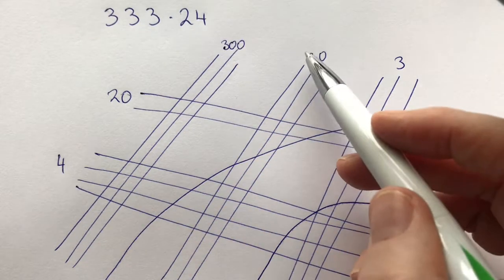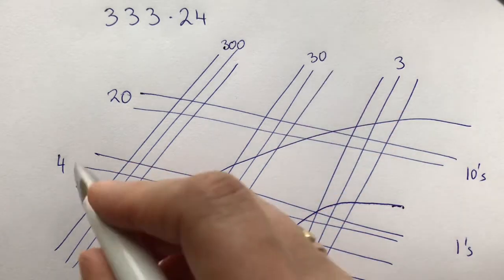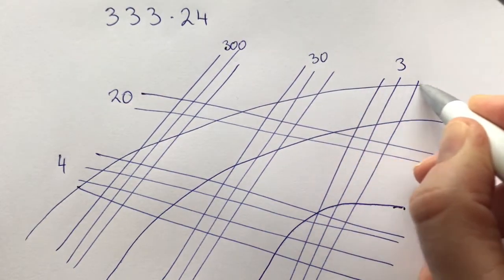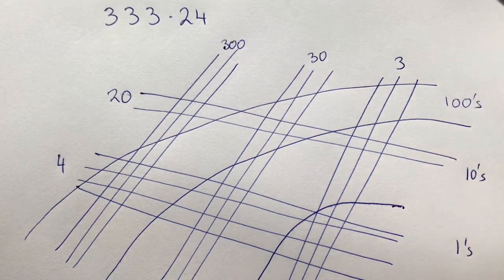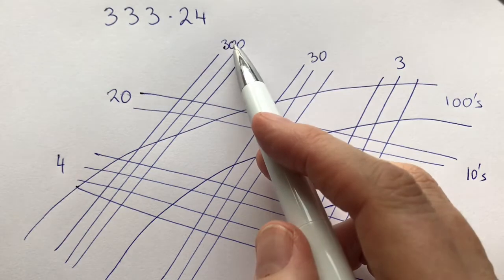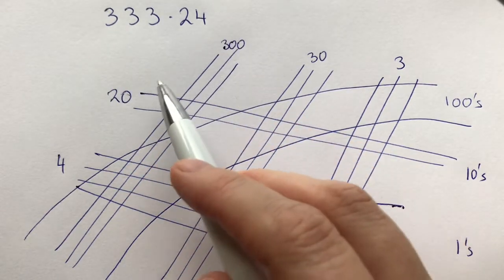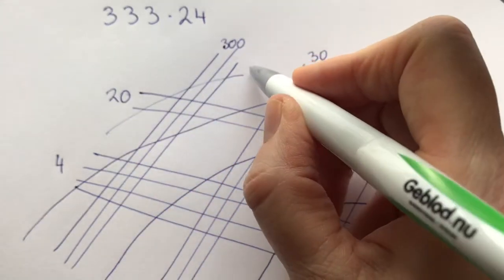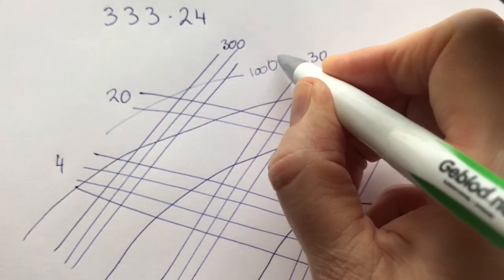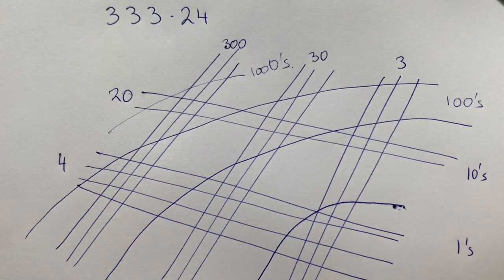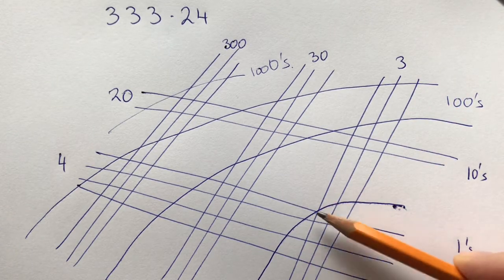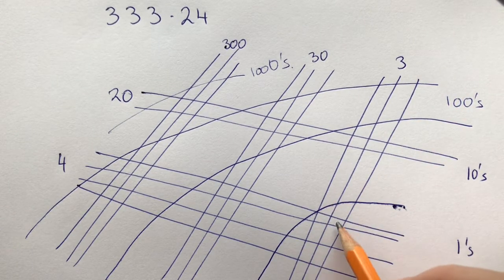We've got three times four, and 30 times 20, so we're also going to get hundreds here. These two areas here are going to be representing our hundreds. And then here we have 300 times 20, so this last set of lines is going to be representing our thousands. And now what we just have to do is calculate. If we look here, we can see that we've got three lines crossing four lines.